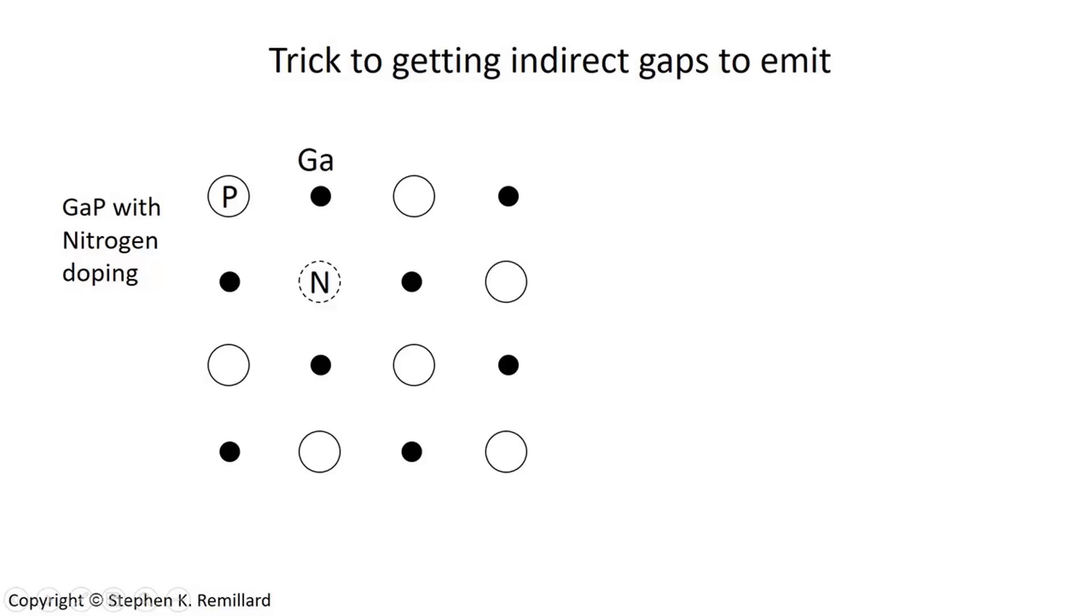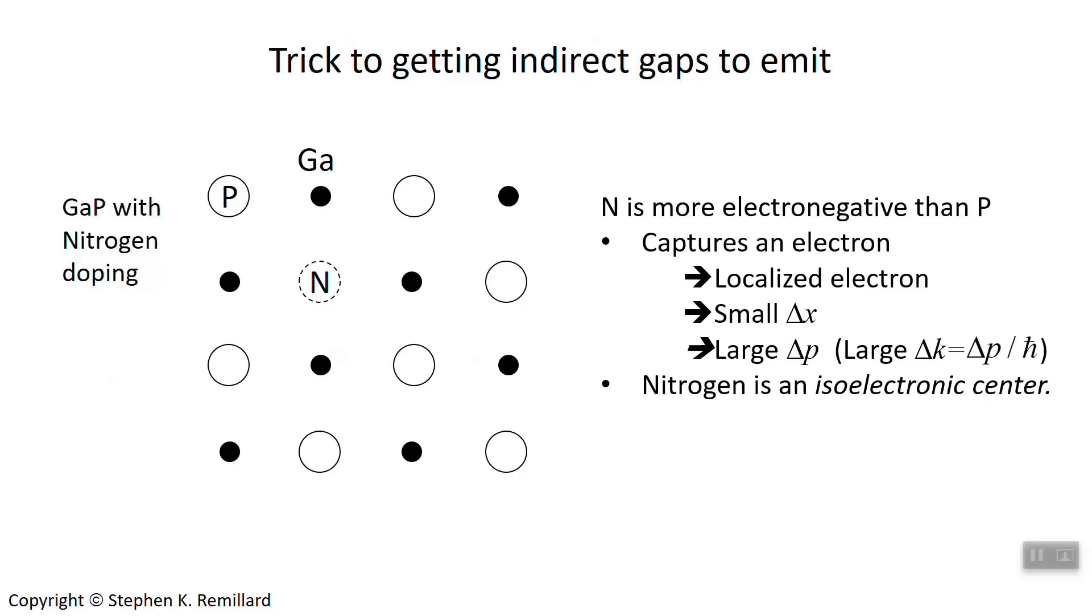How does that give a kick to their momentum? If the nitrogen atoms are attracting electrons, then those electrons become localized. And if they're localized, they have a very small delta x. And per Heisenberg, they have a very large delta p momentum.